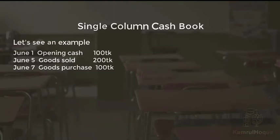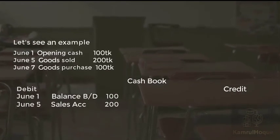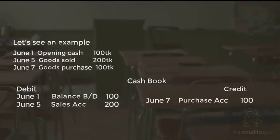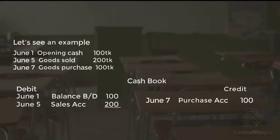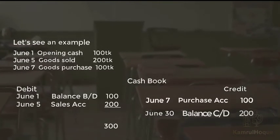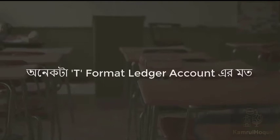This is the cash book with its debit side and credit side. The debit side records cash received — for example, the opening balance on June 1. Cash is on the debit side. When there is a purchase, the credit side is used. The debit side total is $300 and the credit side balance is $200, giving a total balance of $300. This is the standard ledger account format.